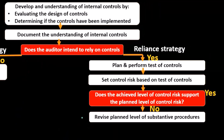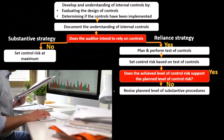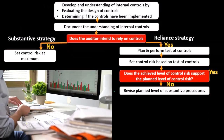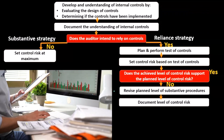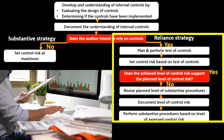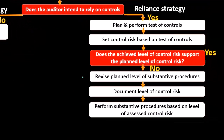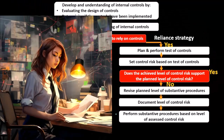If the control risk differs from what we assessed in the planning stage, we account for that by revising the level of substantive testing at the account level, assertion level, and transaction level — as opposed to testing at the internal control level. We'll document the level of control risk determined and then perform substantive procedures based on the assessed control risk, digging into those accounts and transactions.